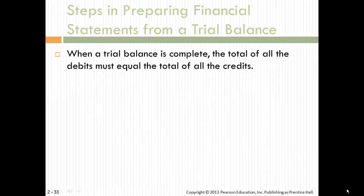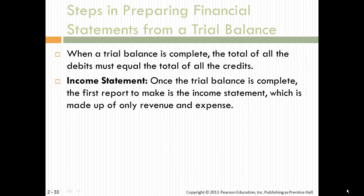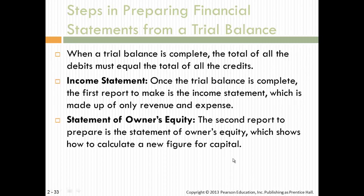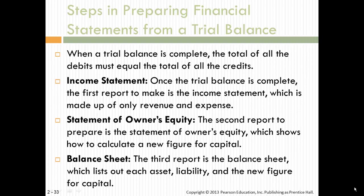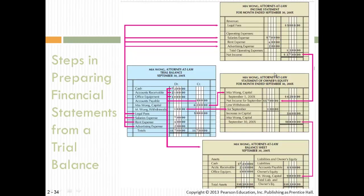Once the trial balance is complete, you prepare your financial statements in order. First, the income statement, because you need net income to do the owner's equity statement. Then the owner's equity statement: beginning capital, plus or minus net income or loss, less withdrawals, gives you ending capital. That ending capital goes on the balance sheet. Note that the total of the trial balance does not equal the total of any other report because the trial balance includes all accounts.